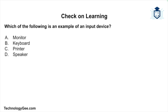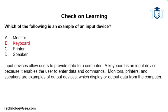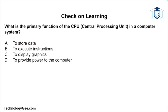First question: Which of the following is an example of an input device — a monitor, a keyboard, a printer, or a speaker? The correct answer is a keyboard. Input devices allow users to provide data to a computer. A keyboard is an input device because it enables the user to enter data and commands. Monitors, printers, and speakers are examples of output devices, which display or output data from the computer.